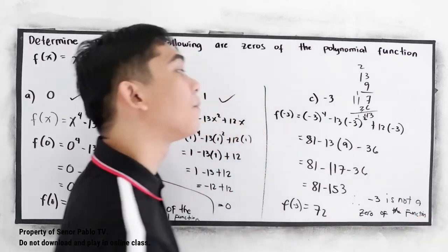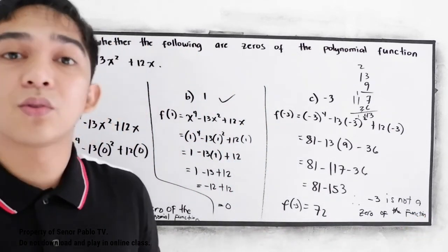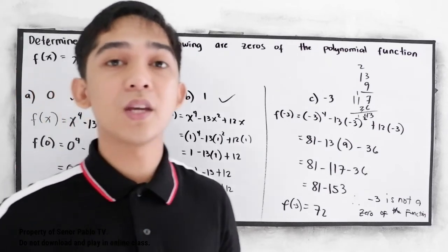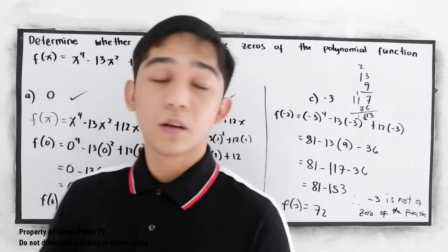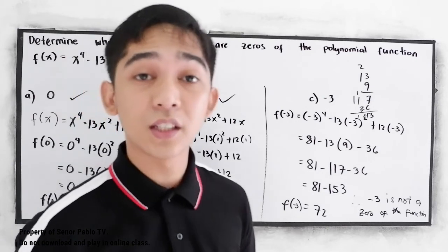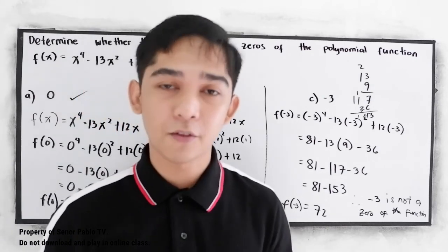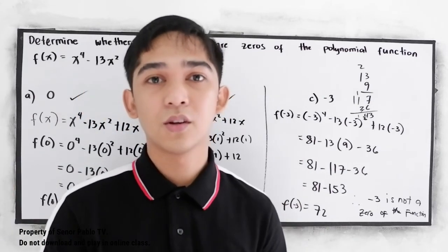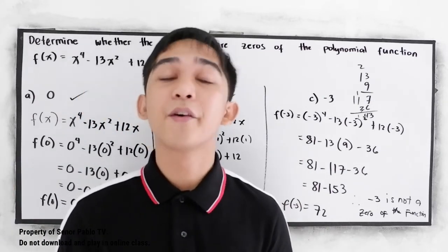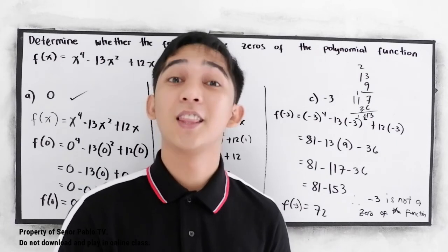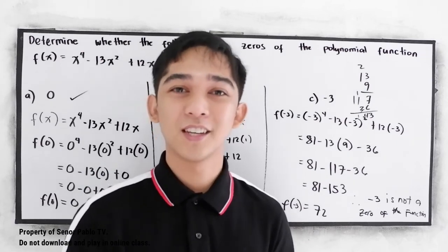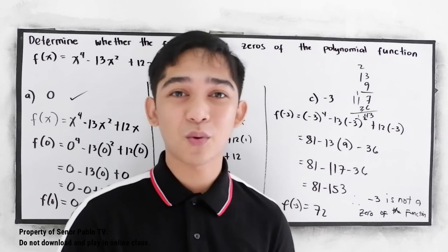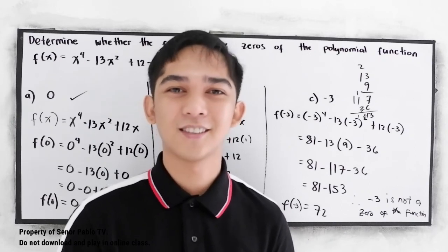That's how to determine whether a given value is a zero of the polynomial function — just substitute into the given function. Thank you for watching Senior Pablo TV. See you in our next lesson.